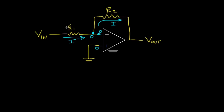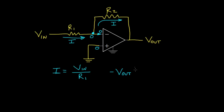The current I flows through resistor R1. The voltage on the input side is Vin and the voltage on the other side is zero, so the current I equals Vin divided by R1. We also know there will be a voltage drop across R2 equal to this current times R2. The voltage drop from the virtual ground node to the output, in the direction of current flow, gives us zero minus Vout, which equals I times R2.